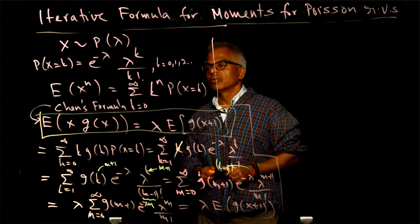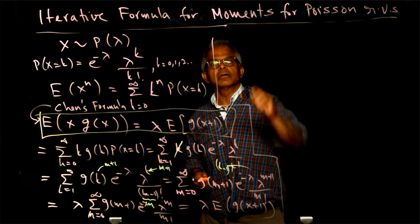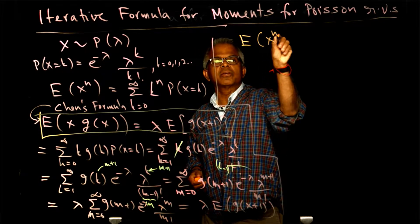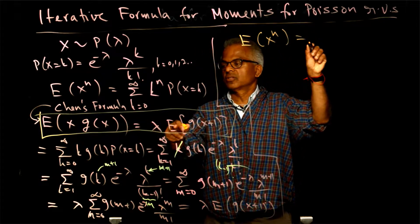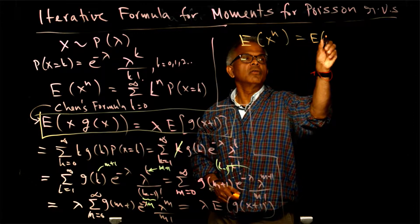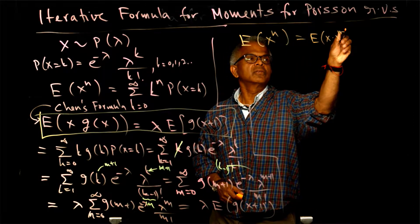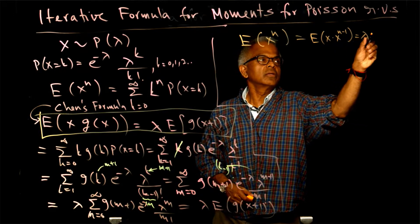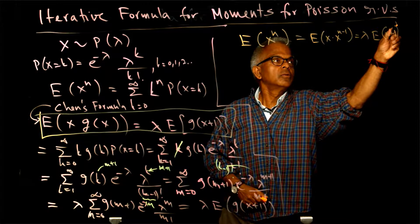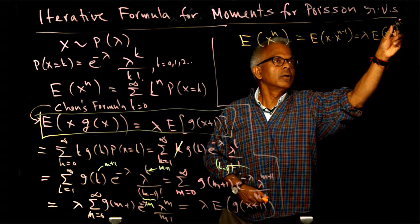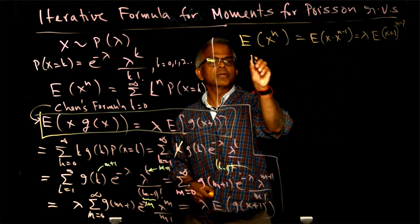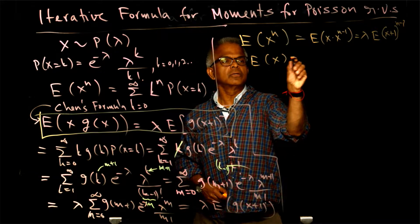We can use this formula to compute the moments. For example, the expected value of x^n — using this formula, I can write this as the expected value of x multiplied by (x+1)^(n-1). So this is lambda times the expected value of (x+1)^(n-1). The expected value of x is of course lambda.